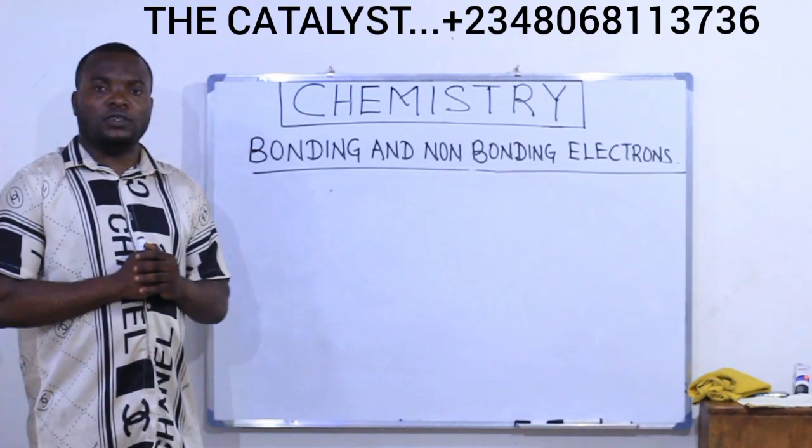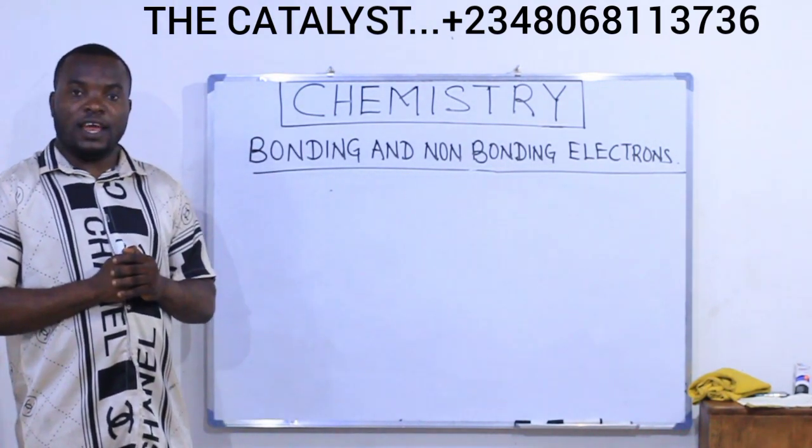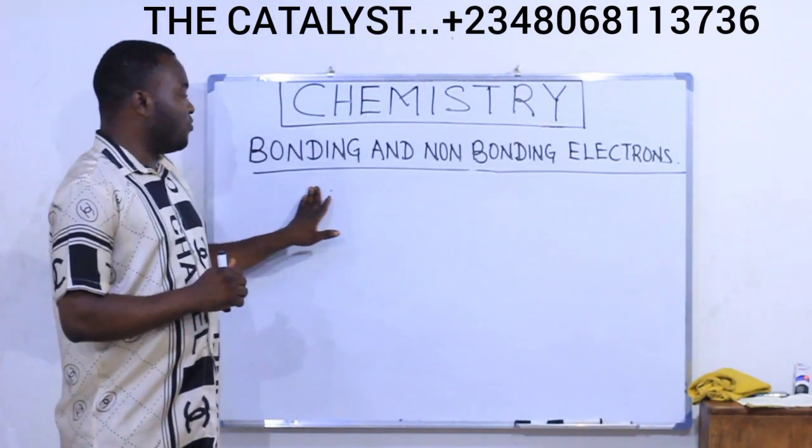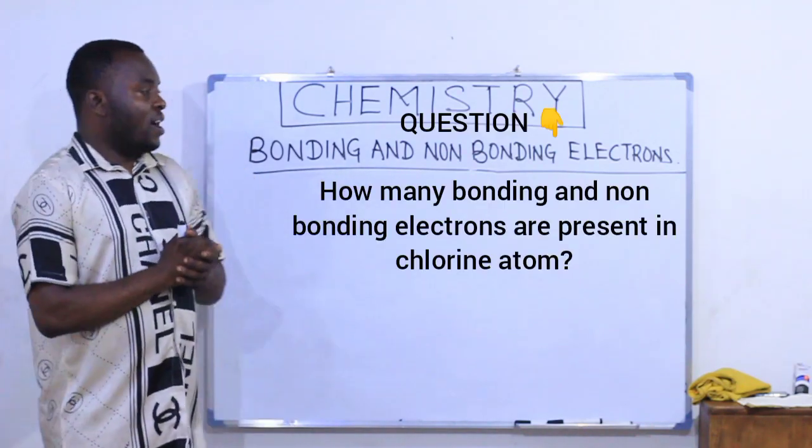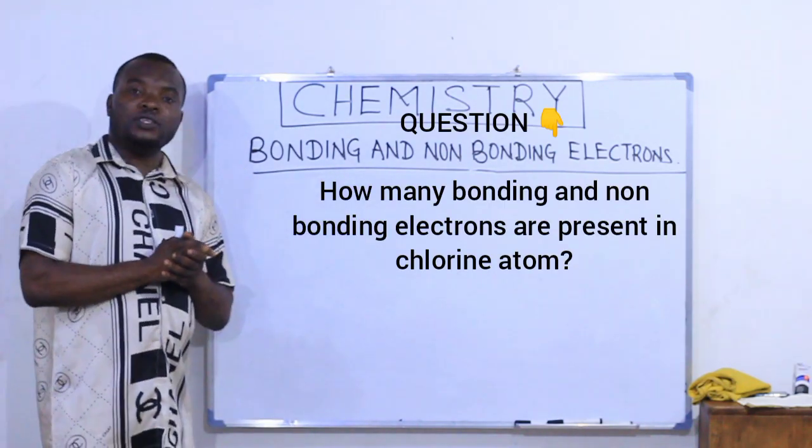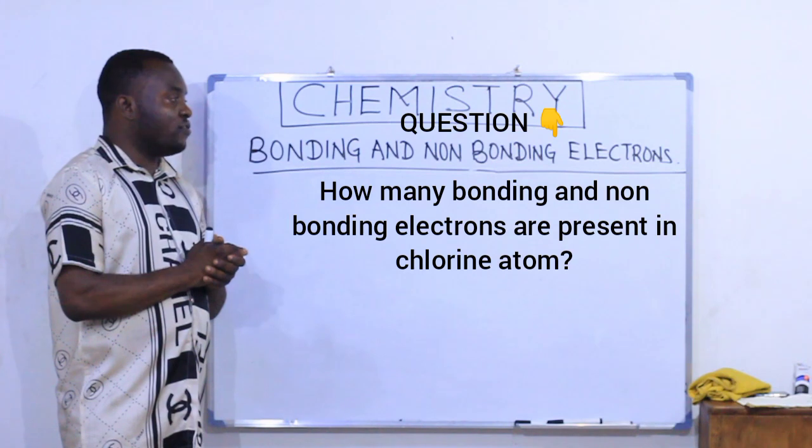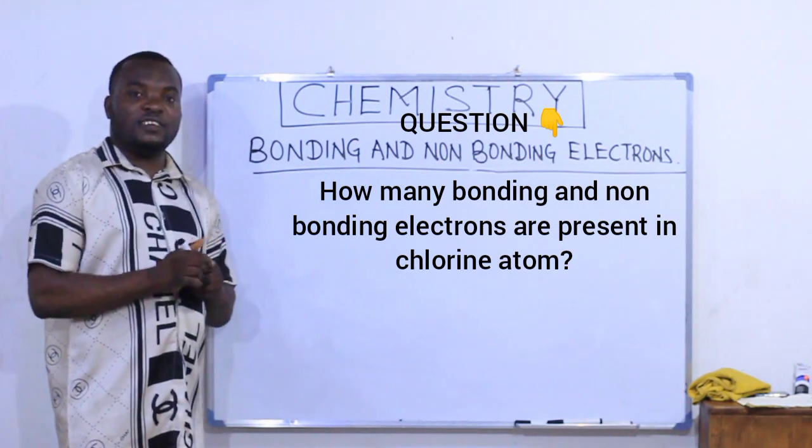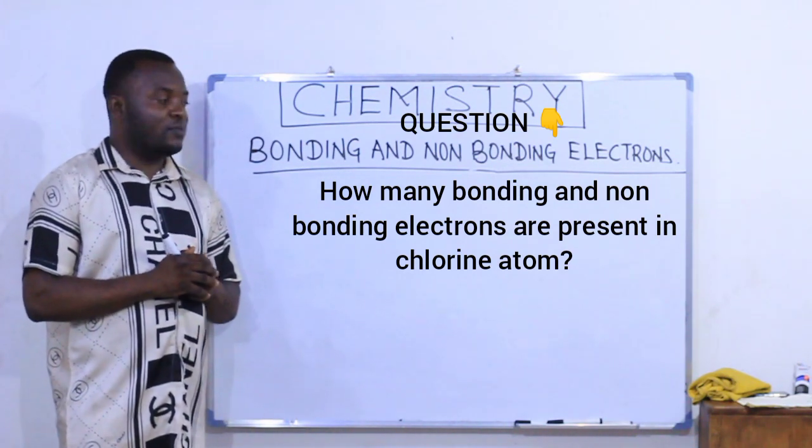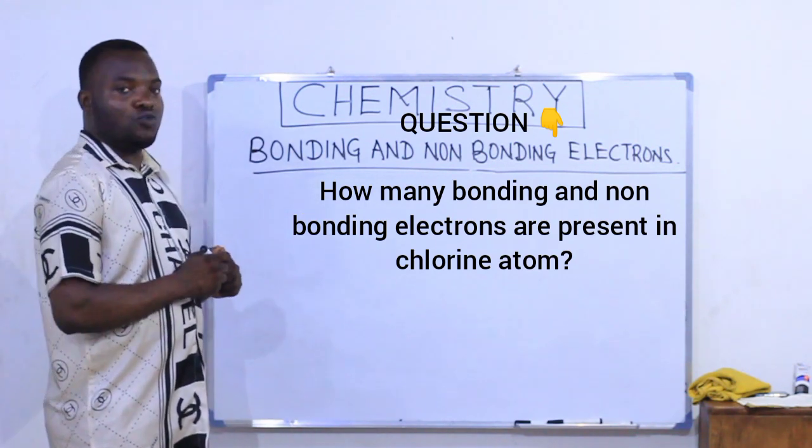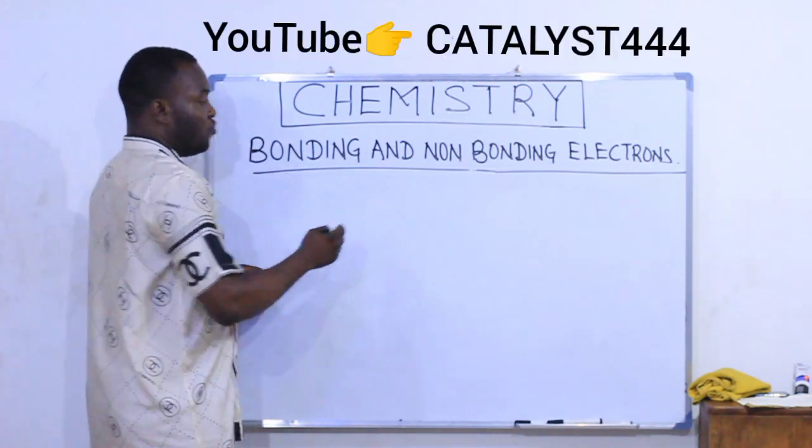Let's take a look at this question on bonding and non-bonding electrons. This question says, how many bonding and non-bonding electrons are present in chlorine atom? Let's quickly solve that. Solution.